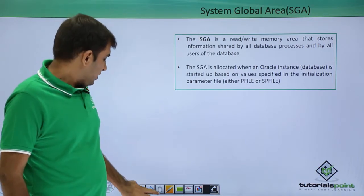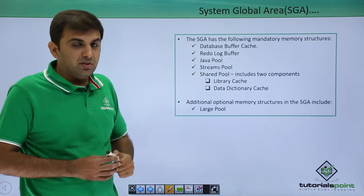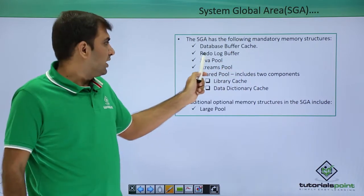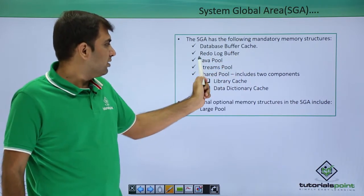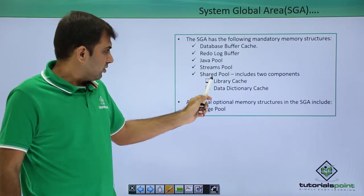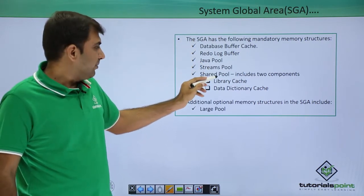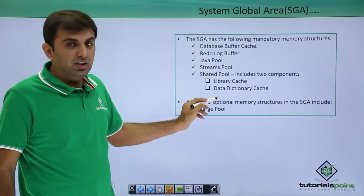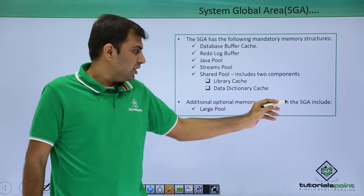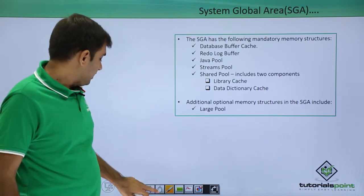So that is the explanation of the SGA. Next, SGA components. SGA has the following mandatory memory structures: the first one is the database buffer cache, redo log buffer, Java pool, stream pool, and shared pool. The shared pool also includes the library cache and data dictionary cache. Additional optional memory structures in the SGA include the large pool.